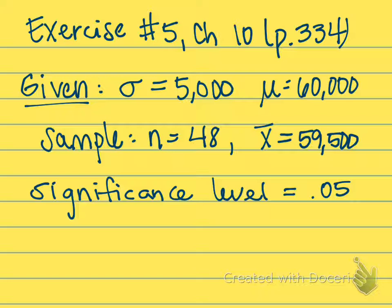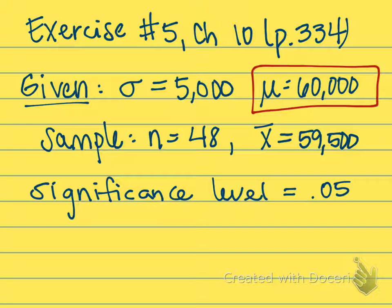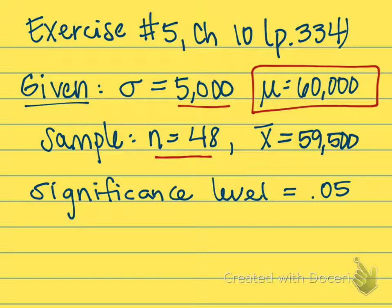So this is the population parameter that we're going to test — they're saying that the mean for the population should be 60,000. We're also told that the mileage wear follows a normal distribution and that the standard deviation for our population is 5,000. We have a company that buys 48 tires, so our N is 48, and they found that for their sample the mean mileage was only 59,500 miles.